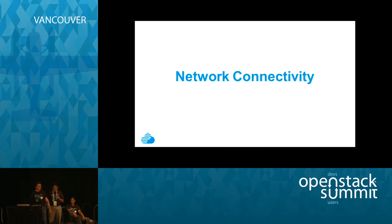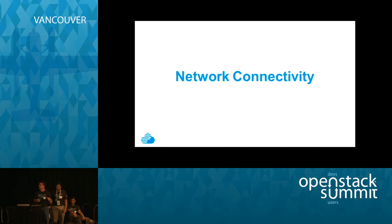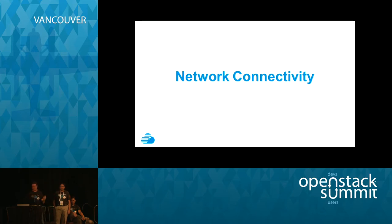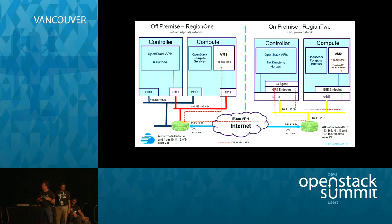The network connectivity in the hybrid cloud scenario covers two items: region-to-region network connectivity between region one and region two, and VM-to-VM connectivity so that VMs deployed in region one can communicate with VMs deployed in region two. Here's a more detailed chart showing the two regions — in this example, just a single controller and a single compute node are shown, but you could have multiple controllers in a high-availability scenario. We have a single VM shown on each side, VM1 and VM2, and this is what we want to get communicating.